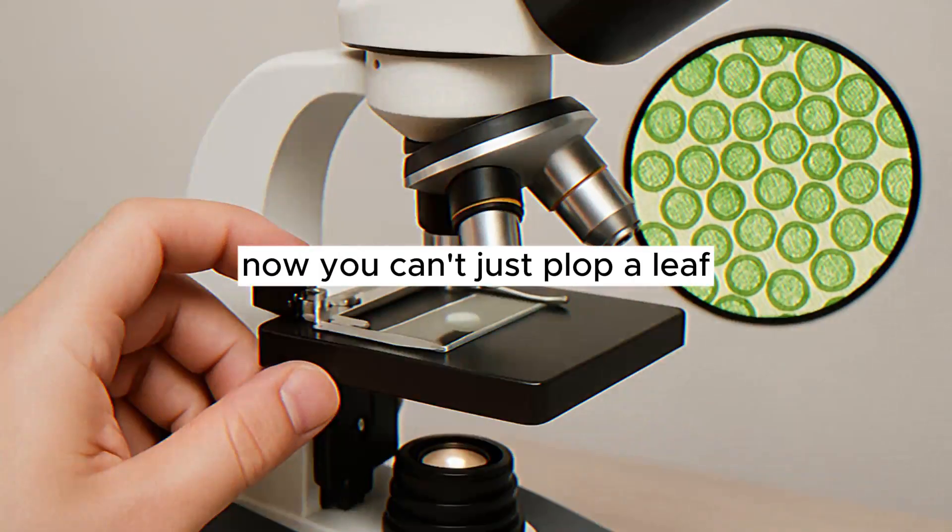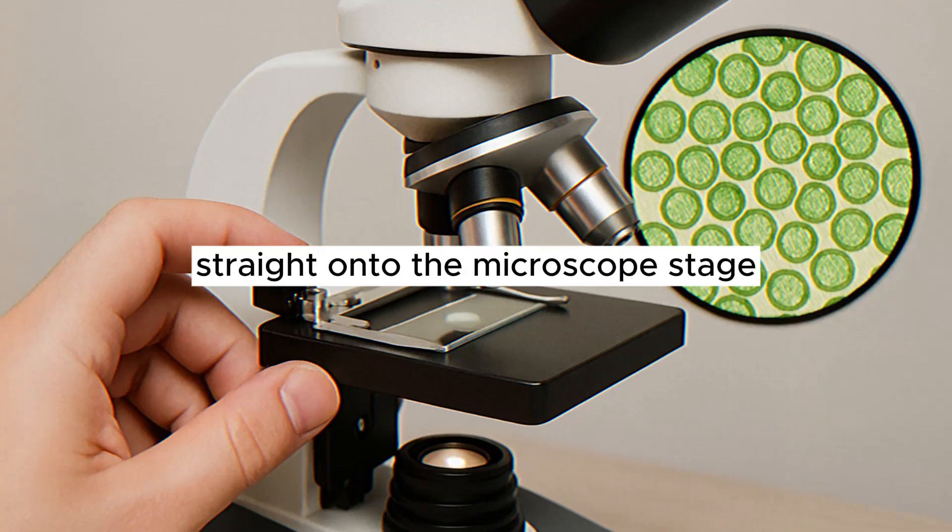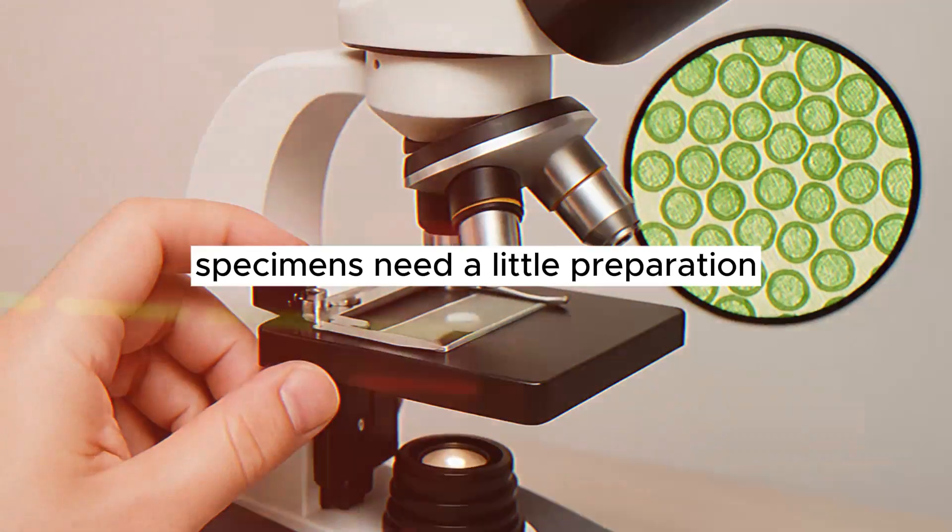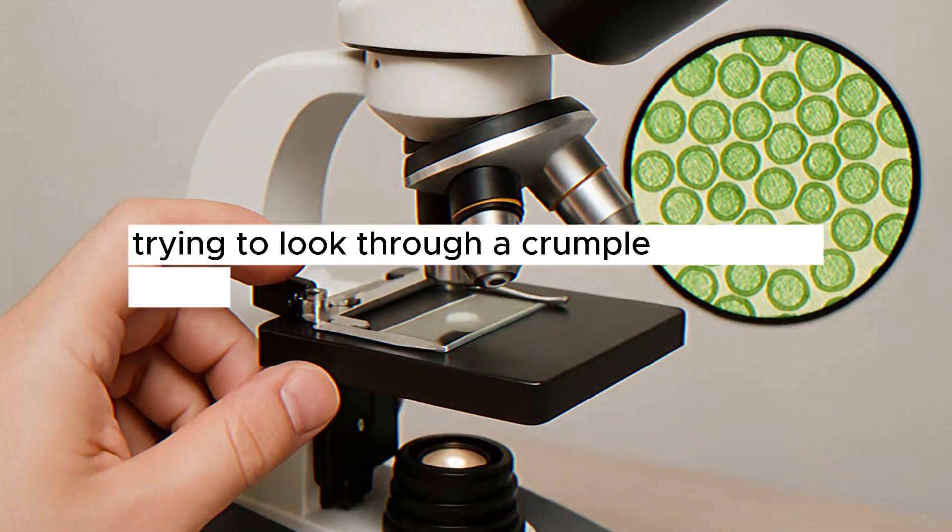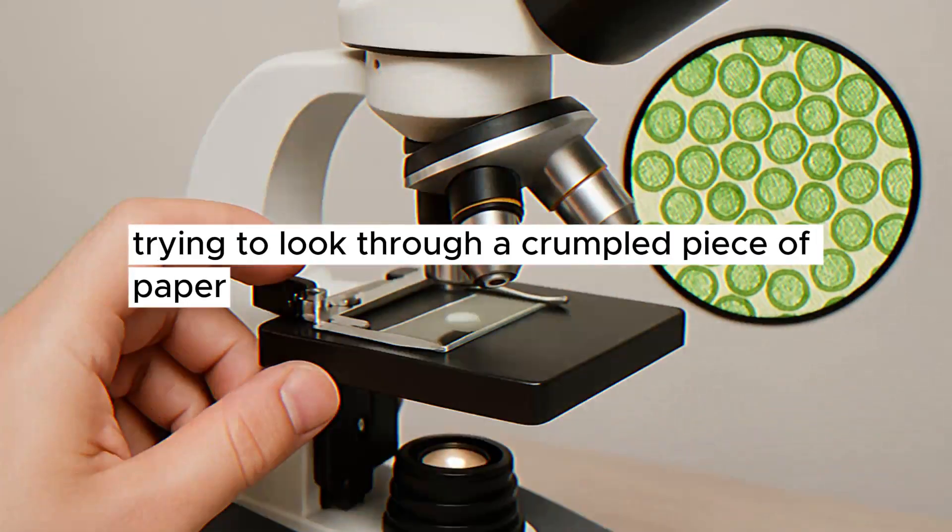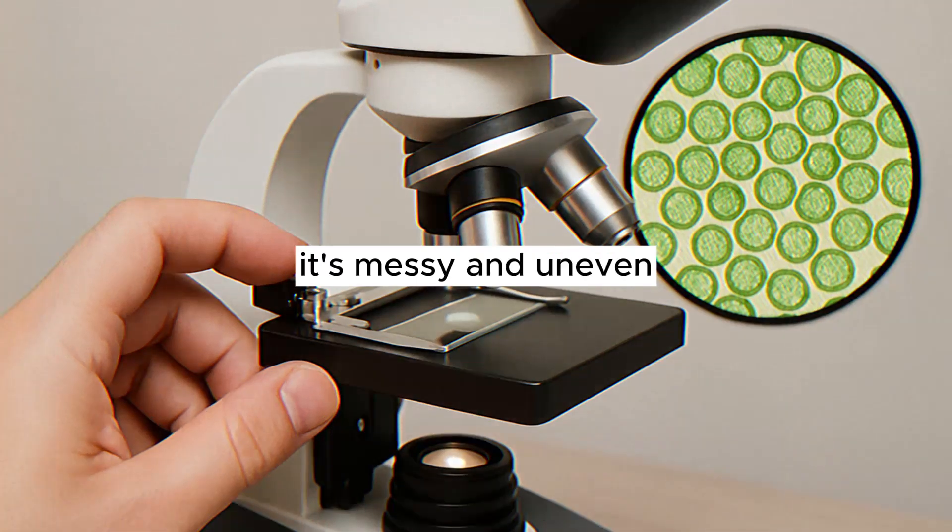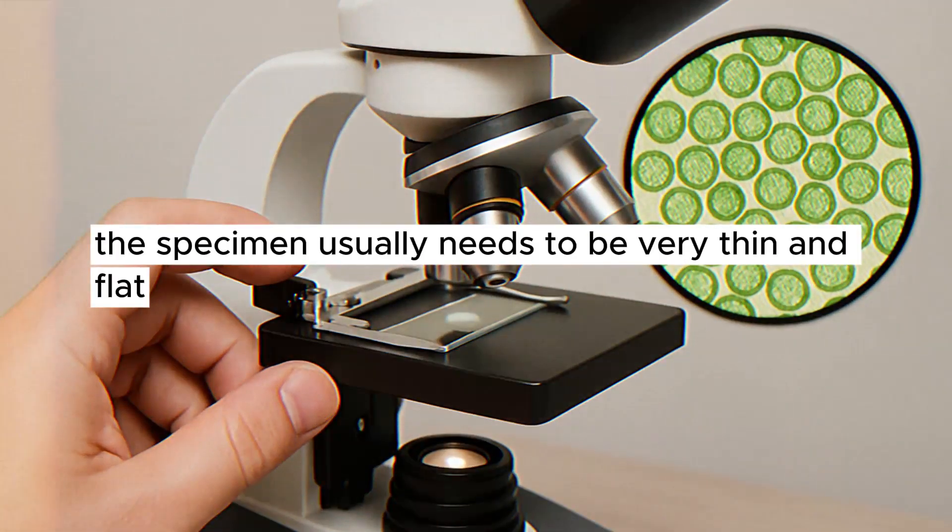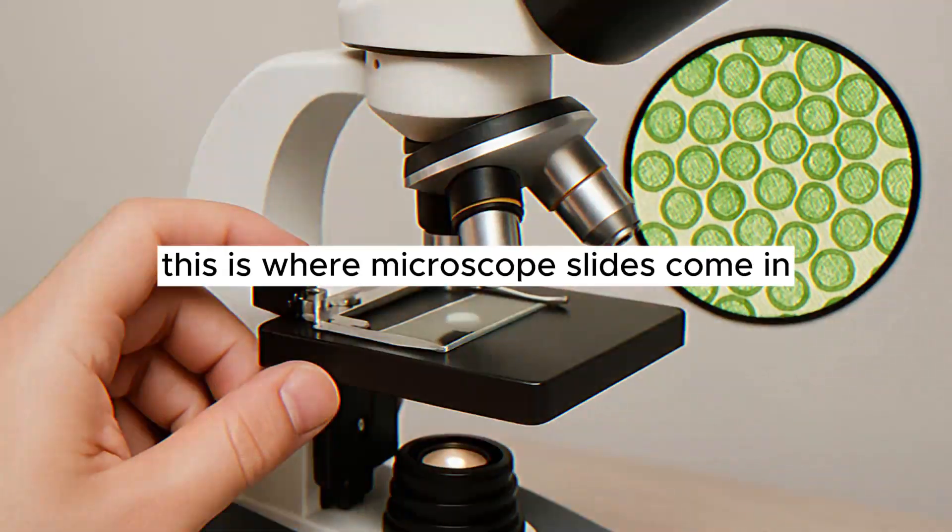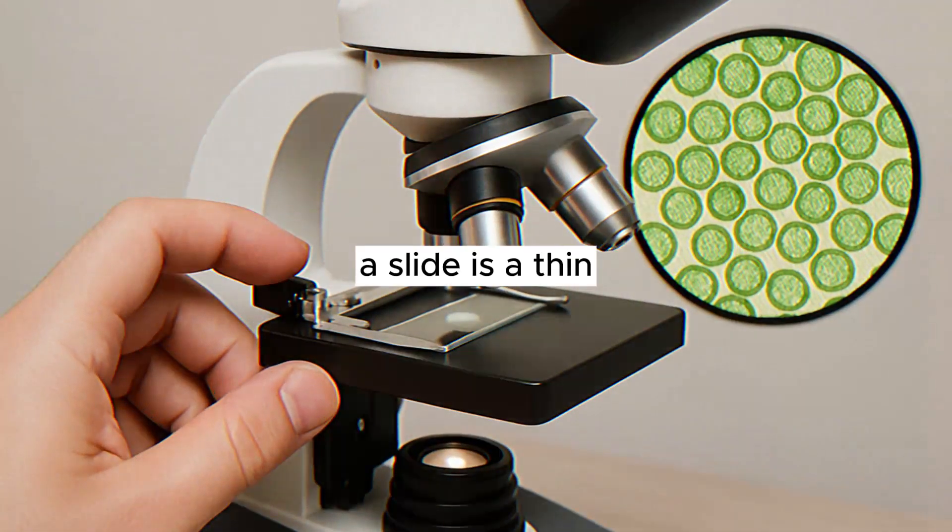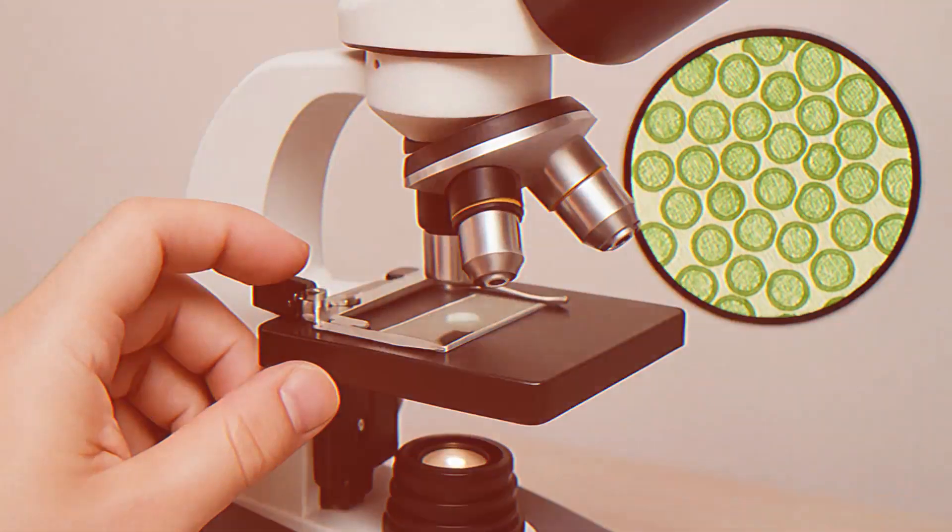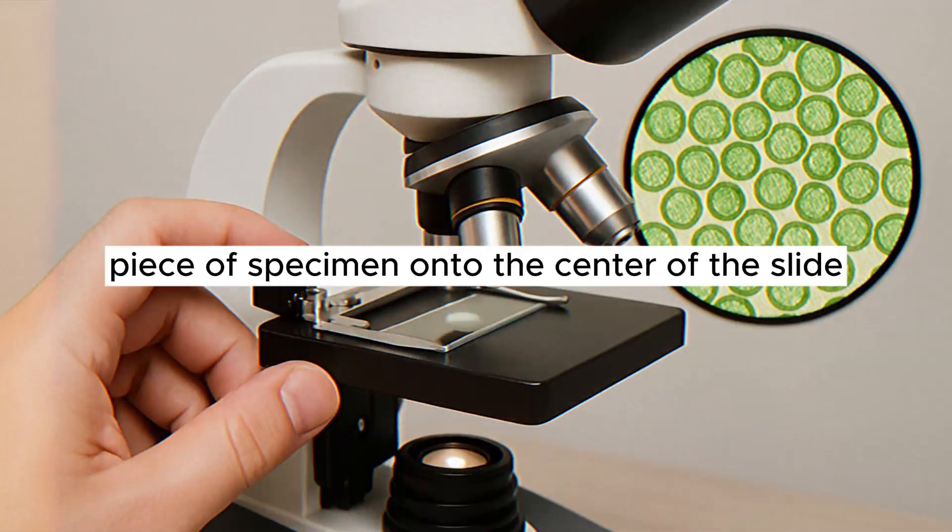Now, you can't just plop a leaf or a piece of your skin straight onto the microscope stage and expect to see cells clearly. Specimens need a little preparation. Imagine trying to look through a crumpled piece of paper. It's messy and uneven. For the light to pass through evenly and for the microscope to focus properly, the specimen usually needs to be very thin and flat. This is where microscope slides come in. A slide is a thin, flat rectangle of clear glass or plastic.